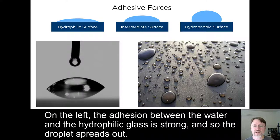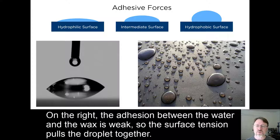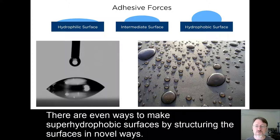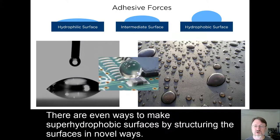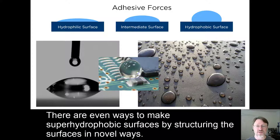On the left, the adhesion between the water and the hydrophilic glass is strong, so the droplet spreads out. On the right, the adhesion between the water and the wax is weak, so the surface tension pulls the droplet together. There are even ways to make superhydrophobic surfaces by structuring the surfaces in novel ways.